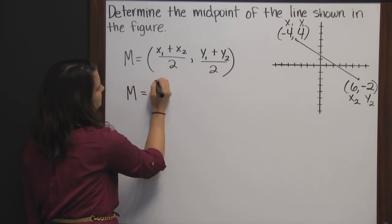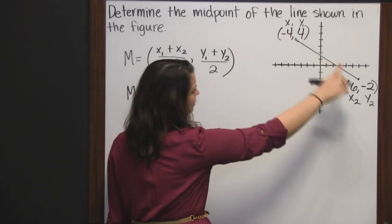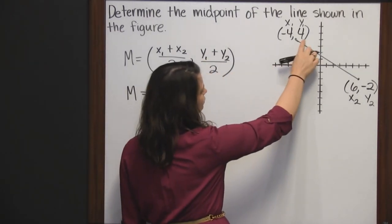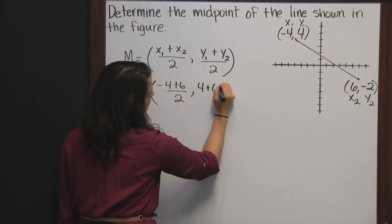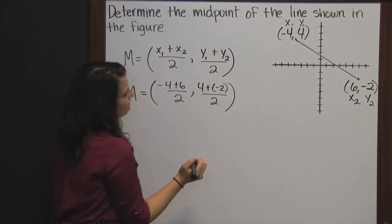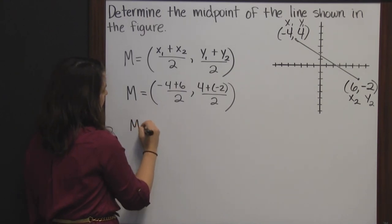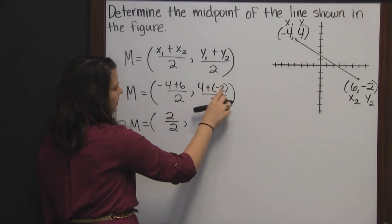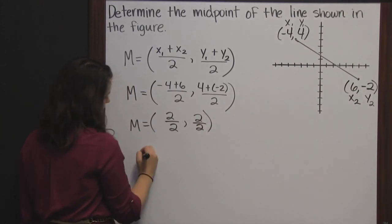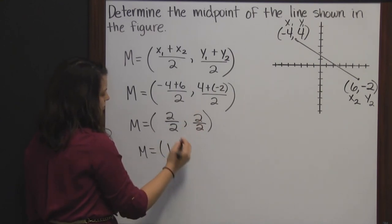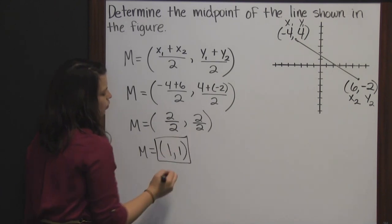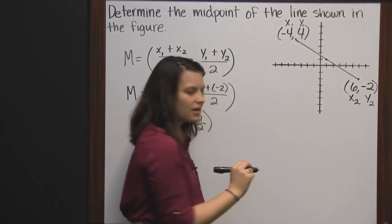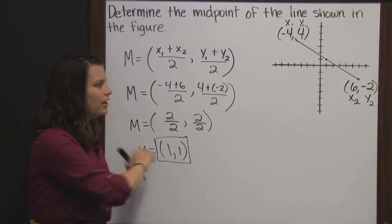So the midpoint is x1 plus x2 — negative 4 plus 6 — divided by 2, and y1 plus y2 — 4 plus negative 2 — divided by 2. Simplifying by adding: negative 4 plus 6 is 2, divided by 2. And 4 plus negative 2 is 2, divided by 2. Dividing: 2 divided by 2 is 1, and 2 divided by 2 is 1. So the midpoint is (1, 1). You can see on this graph, over 1, up 1 — and that point does look like it's right in the middle of that line. That's our midpoint.